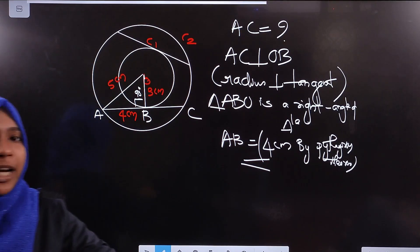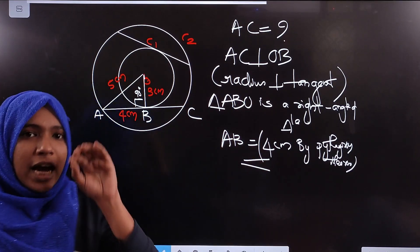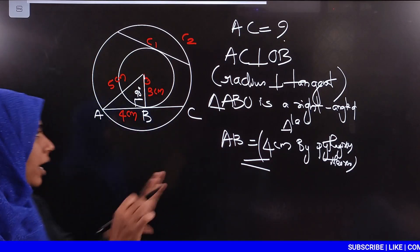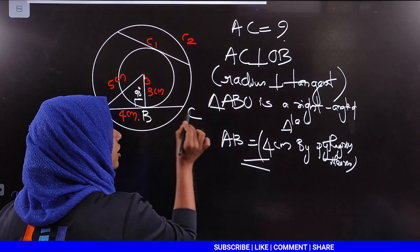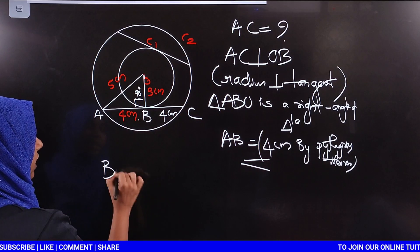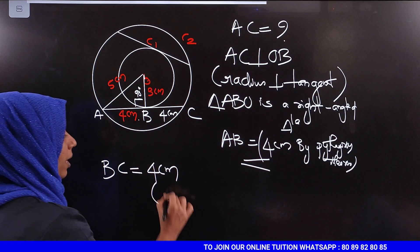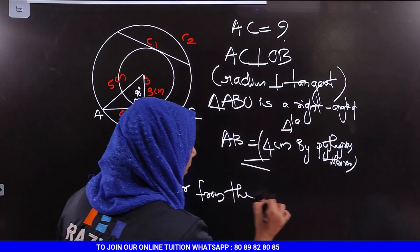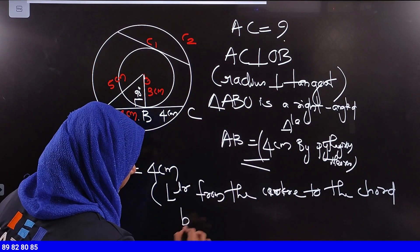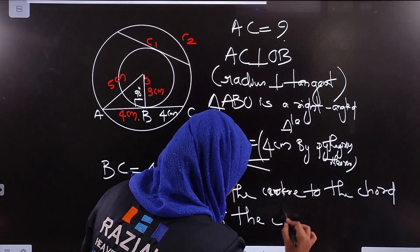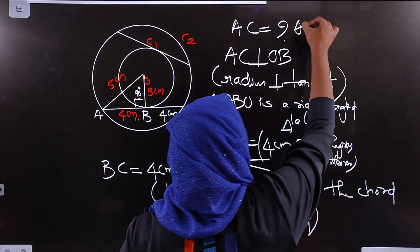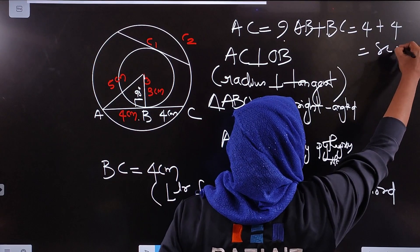The reason is the perpendicular from the centre to the chord bisects the chord. OB equals 3 cm, OA equals 5 cm. Using the right-angle triangle, AB equals 4 cm, and AB plus BC equals 4 plus 4, which is equal to 8 cm. And that's the answer.